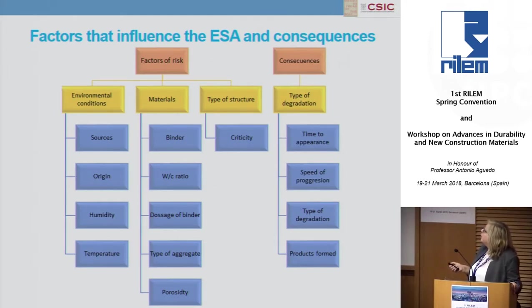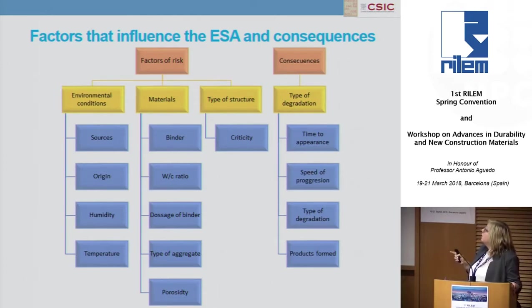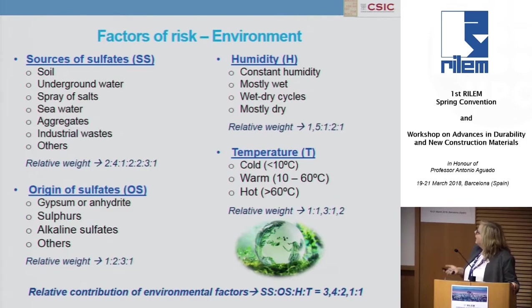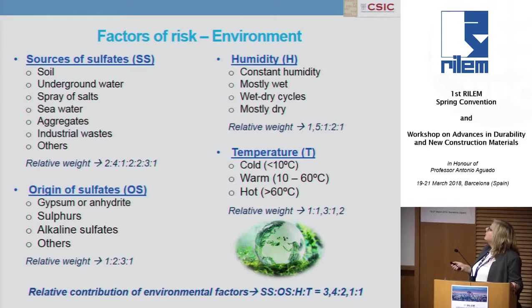We have divided into four main groups: environmental condition, material, type of structure, and type of degradation. Each of these main aspects has been divided into different parameters that we have analyzed and defined a relative weight for each. In environmental condition, we have defined the source of sulfates from soils, groundwater, spray of salt, seawater, aggregates, industrial waste, and other origins.